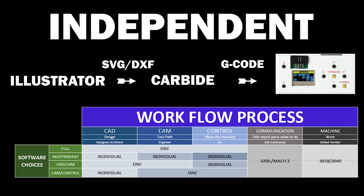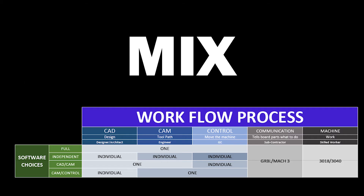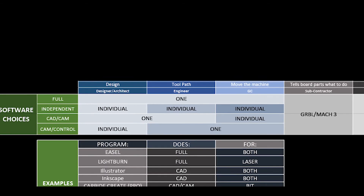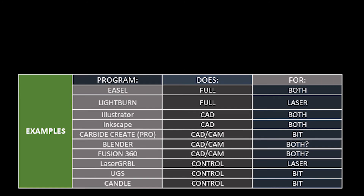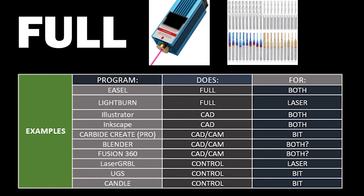If you want to do your own work I'd suggest getting Inkscape or Illustrator. You could also choose individual software for CAD, individual software for CAM, and individual software for control — that's the way my setup is. For CAD I use Illustrator, for CAM I use Carbide Create, and for control I use the actual physical controller. The controller part can either mean the physical controller or a software controller, which could be UGS, Laser GRBL, Candle, or Easel. Easel is a full software choice and from what I can see does a good job of CAM and control, though CAD is simple — good for signs and text.